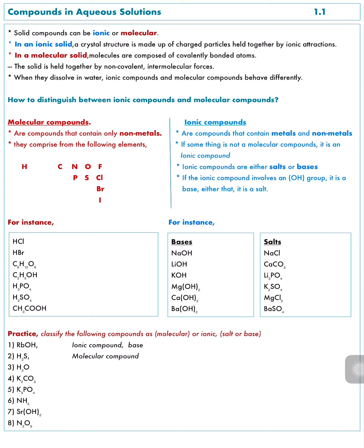Let's practice with some compounds to check comprehension. RbOH — rubidium hydroxide: O and H are in the table but Rb is not, so the compound is ionic. It contains OH, therefore it is a base. H2S — hydrogen sulfide: H and S are both in the table, so H2S is a molecular compound.